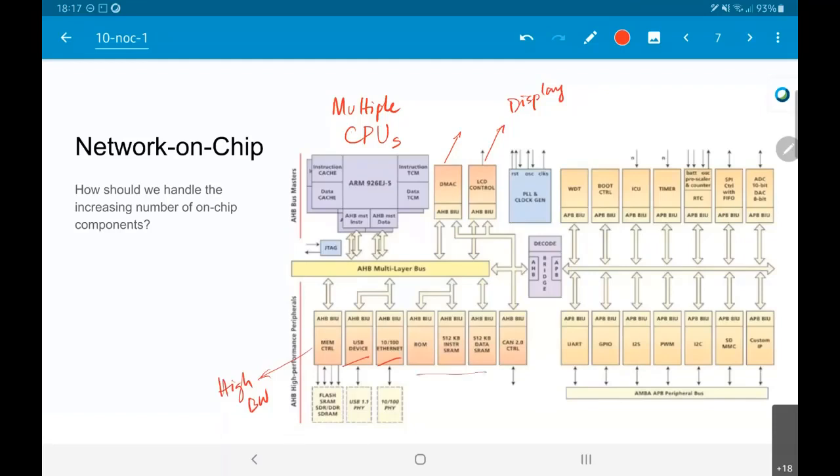And of course, all of these are also going to be high bandwidth. Then finally, you have the bridge and after that you have the low speed peripherals.